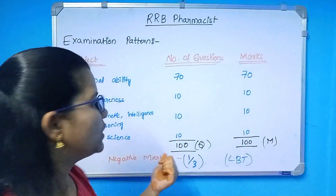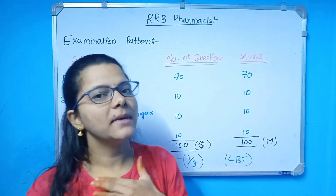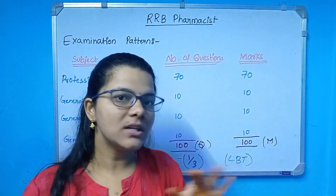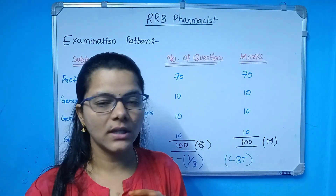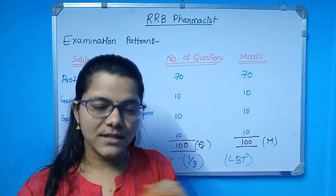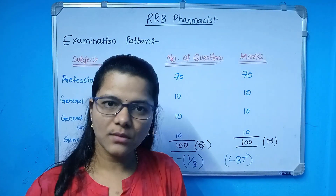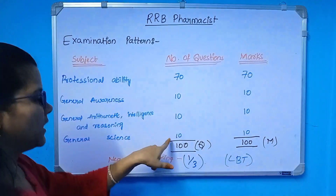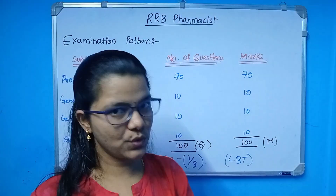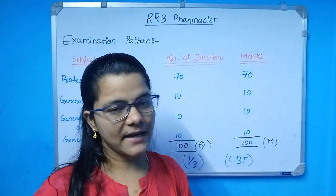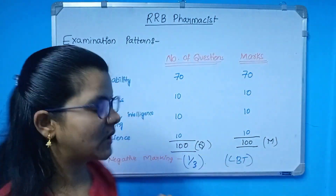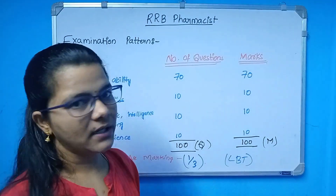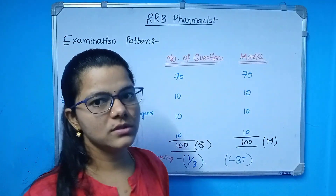For General Science, there are questions from the 6th and 10th class level. There are general science books for those standards — 10 questions total. It is better you follow those books for preparation.